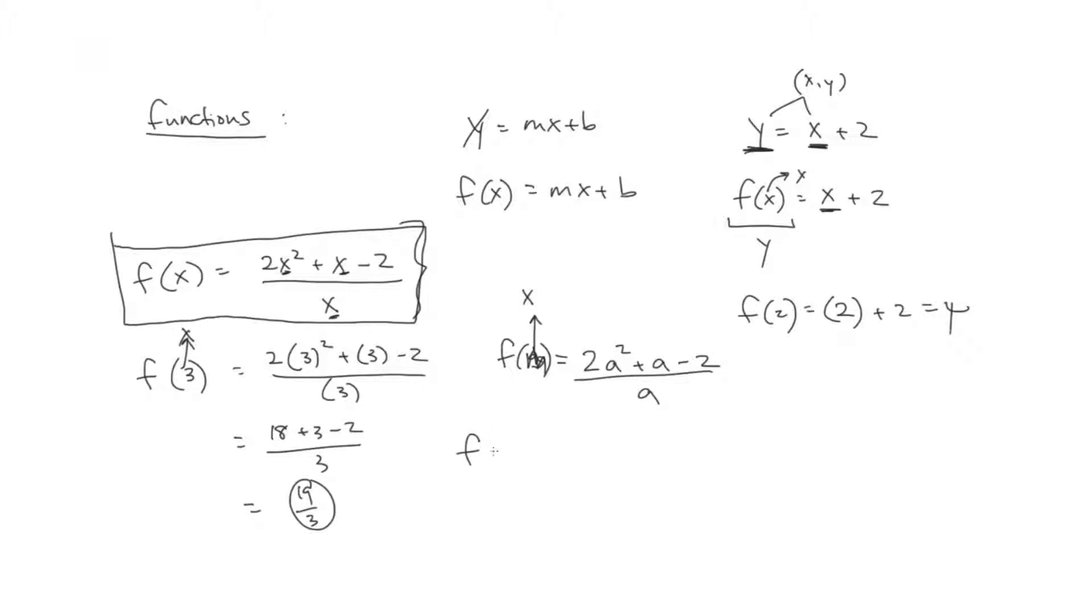To take it one step further, let's say they give us f of m plus n. Again, this entire thing represents your x value. And so don't get confused by the addition sign or the fact that there are two new variables than before. We're just going to plug that into all of these x values. So we get 2 times m plus n squared plus m plus n minus 2 divided by m plus n.